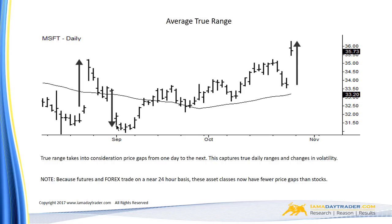That range is much smaller than the differences between the low and the close of the prior day. Same thing over here — another gap up. That range is relatively small compared to the high and the close of the prior day. So true range, and then averaging it, gives you an idea of the true volatility from one day to the other.